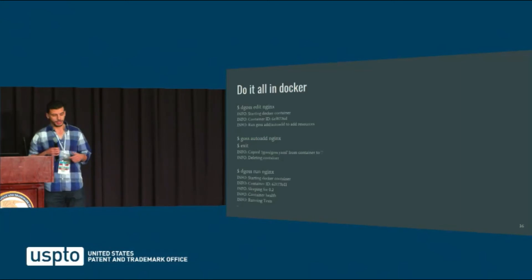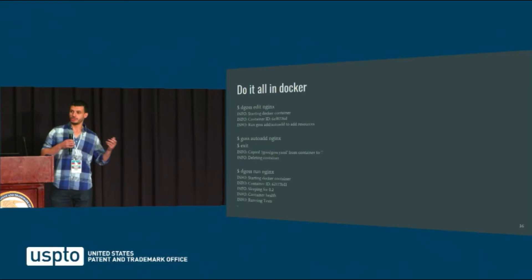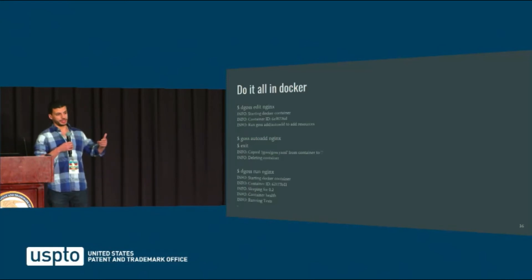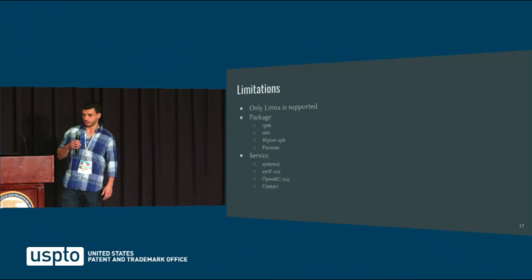Instead of running docker run with the image name, you do dgoss run with the image name, and it'll spin up the image, validate it, and shut it back down. That's how you bring GOSS simplicity to Docker.